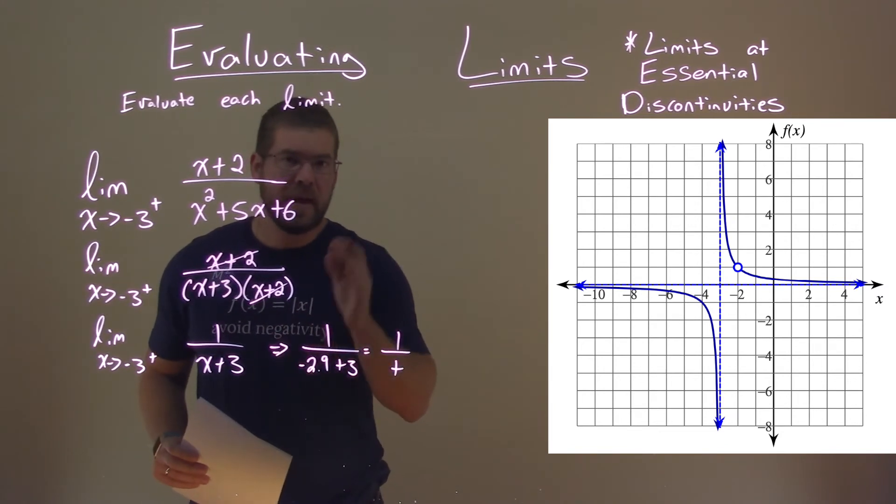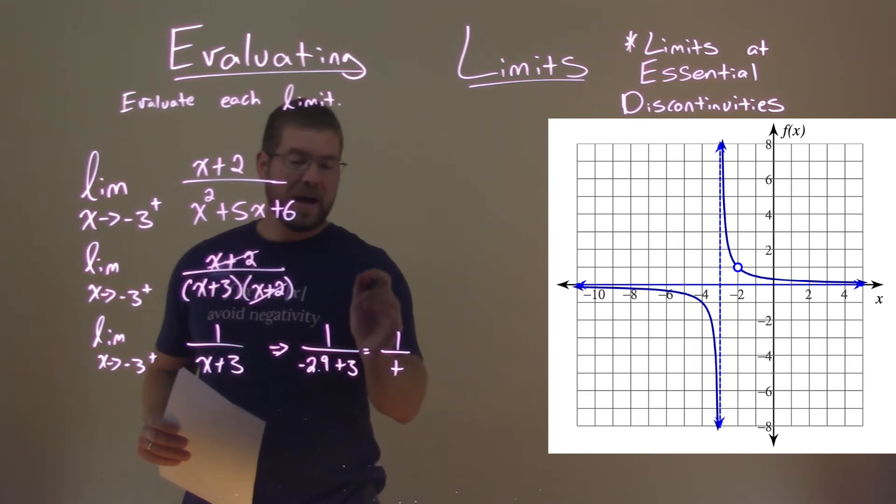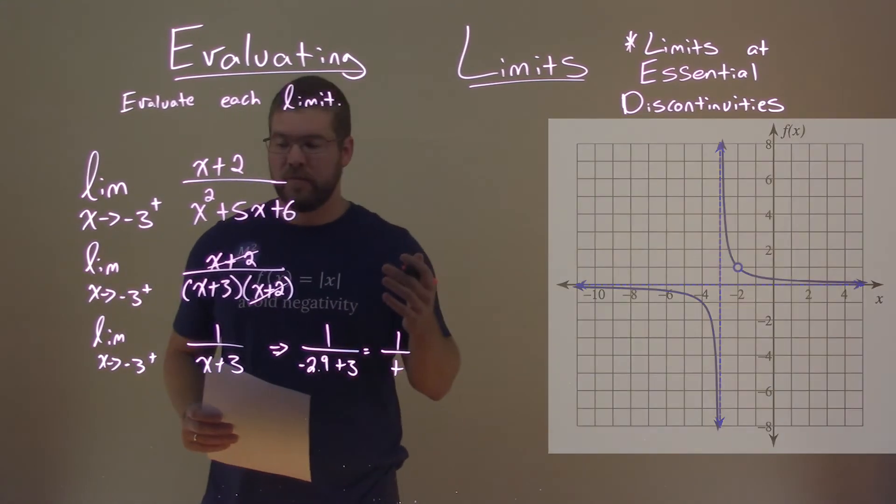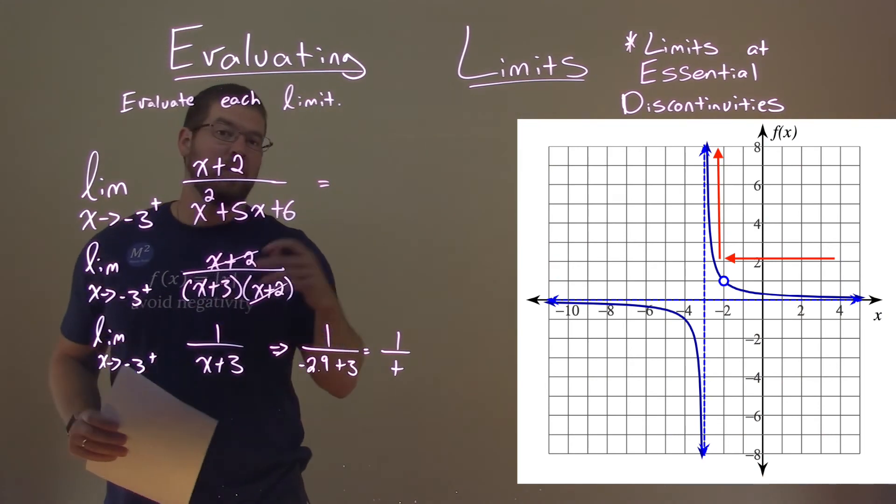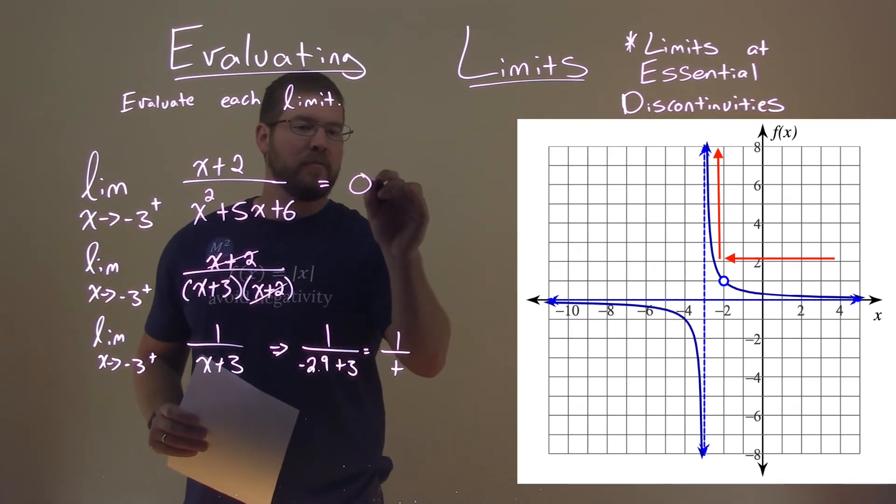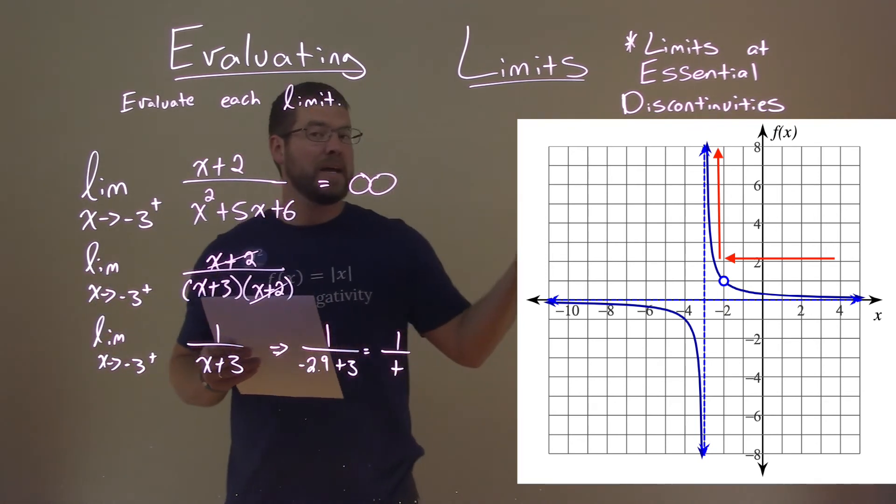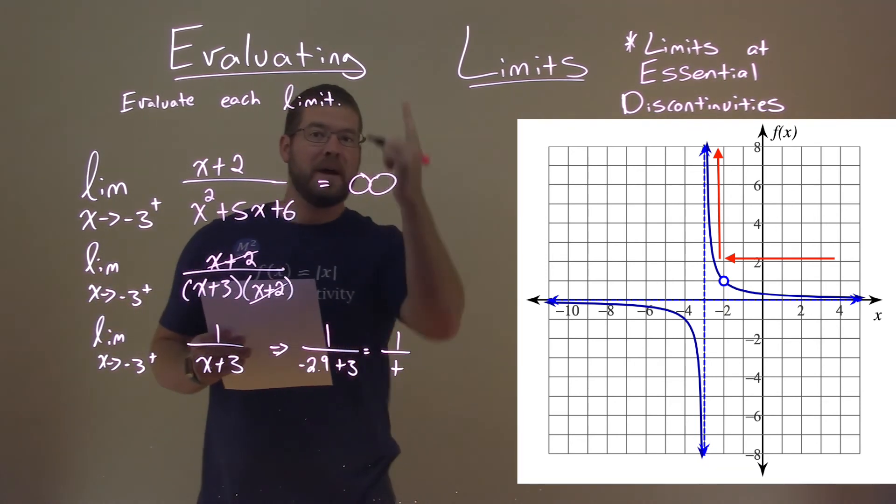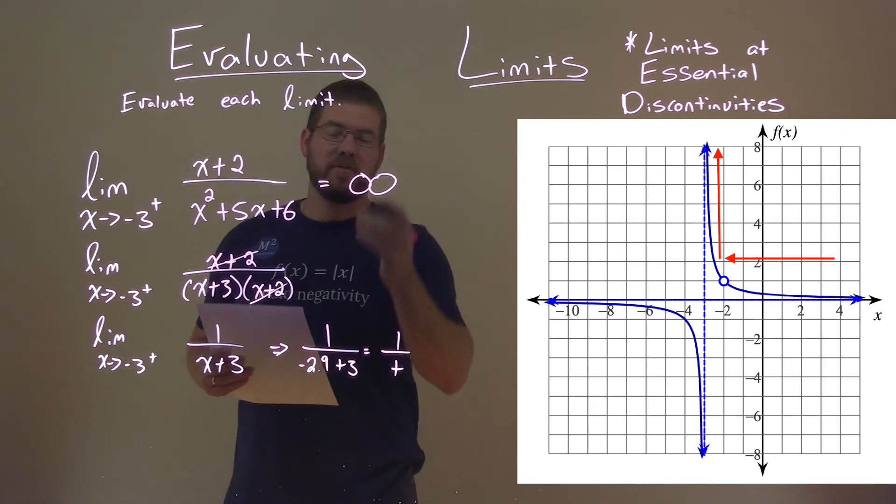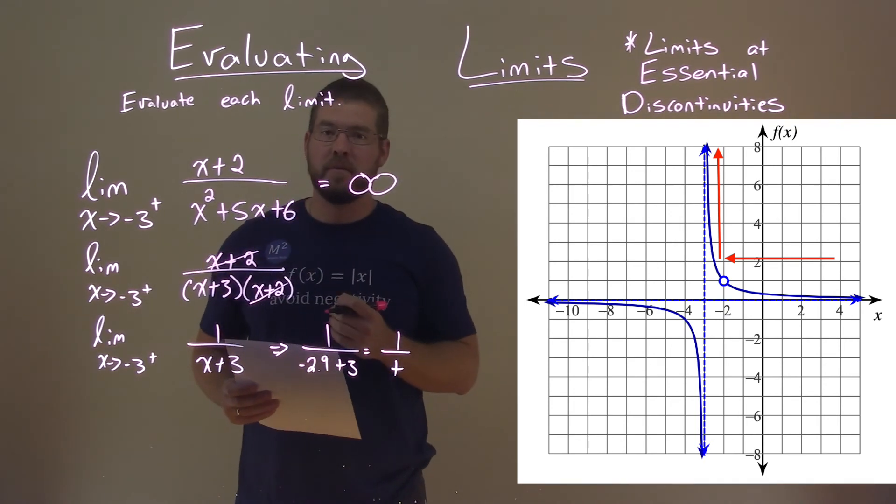What does that tell us? That tells us that we're actually approaching positive infinity as we approach negative 3 from the right. So we have positive infinity right here. And we can see in the graph, as we approach negative 3 from the right, we're going to positive infinity. So our limit, the final answer, is positive infinity.